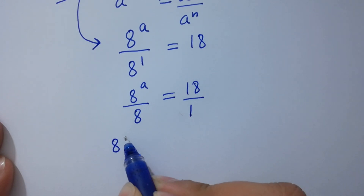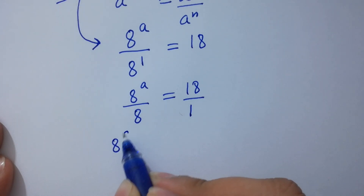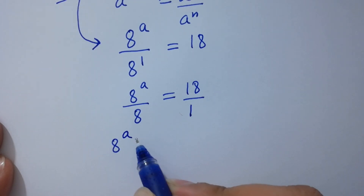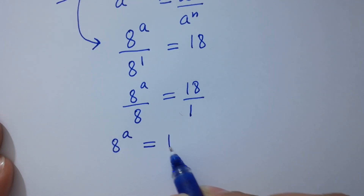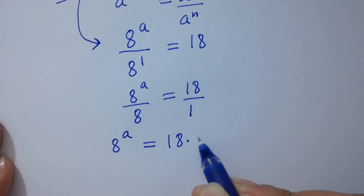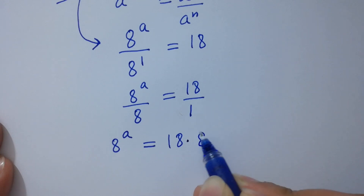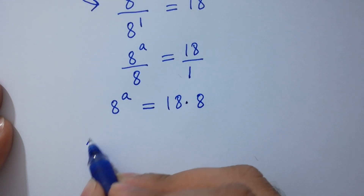we have 8 to the power a times 1, so 8 to the power a equals 18 times 8. Take log on both sides.